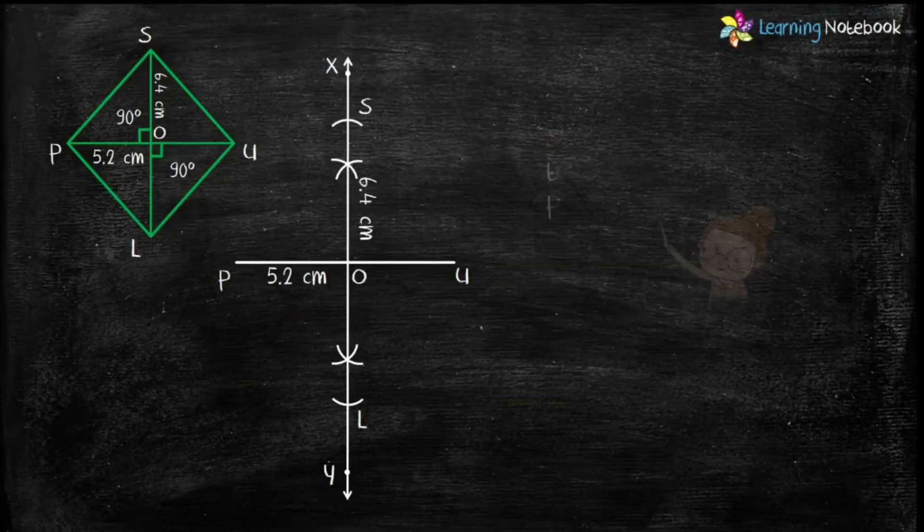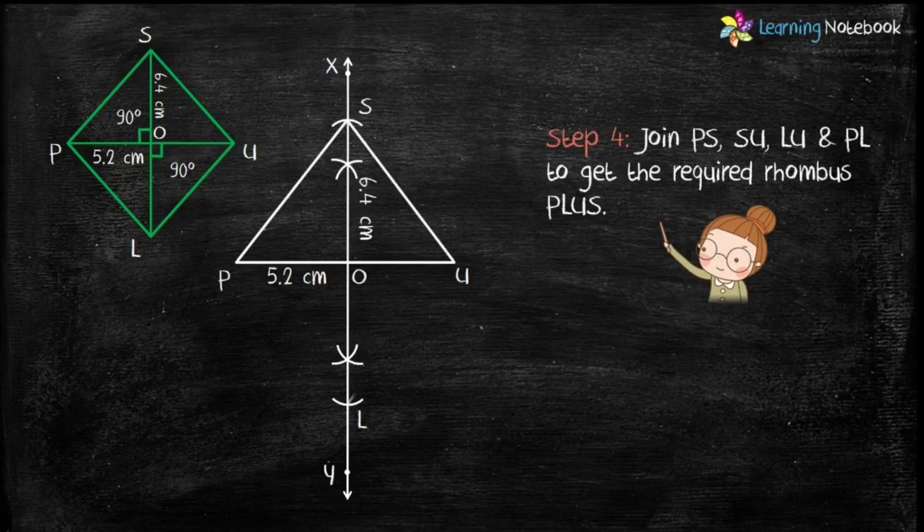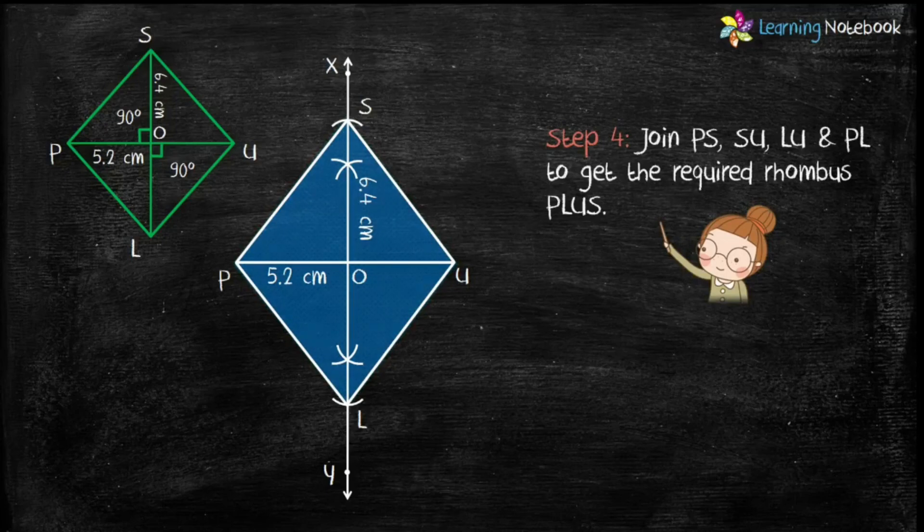Now in last step, let's join PS, SU, LU and PL to get the required rhombus PLUS.